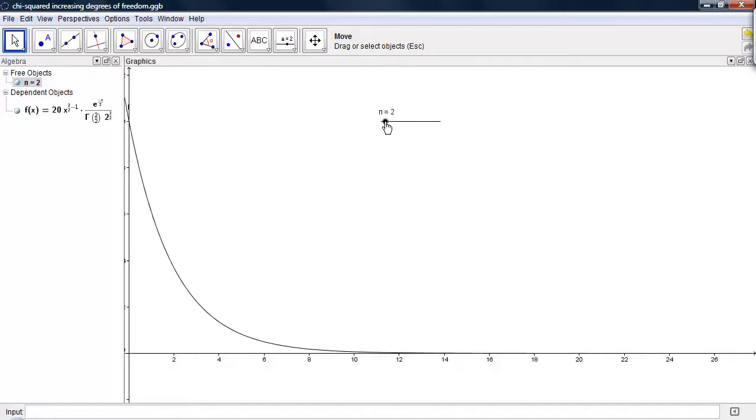If I increase it up to 3, though, we start seeing this mound form, and we get this skewed distribution to the right.